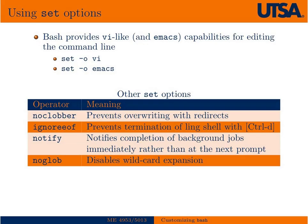There are other popular set options. set -o noclobber prevents overriding files with a redirect — so if you redirect output with > or >>, noclobber prevents overwriting what's already there. ignoreeof prevents terminating a login shell with Control-D. notify notifies you of the completion of a background job immediately rather than waiting until your next prompt. You can also use noglob to disable wildcard expansion.